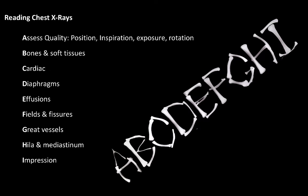Analysis of chest x-rays is best done in a systematic manner. We will examine the thorax anatomy by using the alphabet technique of x-ray analysis. The first step of this analysis is to look at the quality of the x-ray.